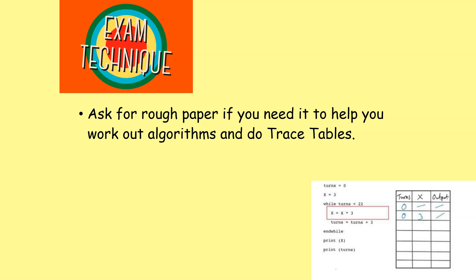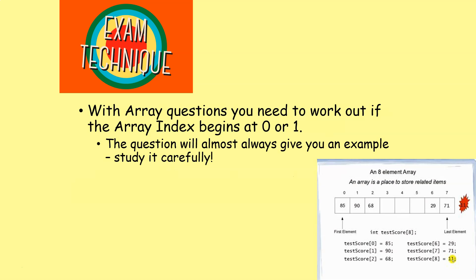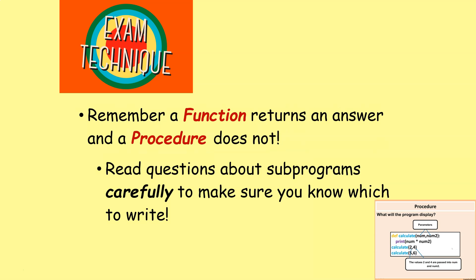Remember to visualize an array by writing the index numbers alongside the headings. If it starts at zero, write 0, 1, 2, 3; if it starts at one, write 1, 2, 3, 4, etc. This will help you avoid making silly mistakes. With array questions, read the question carefully and work out whether the first element is index position zero or index position one — it will always give you an example in the question.